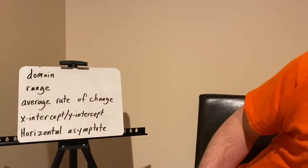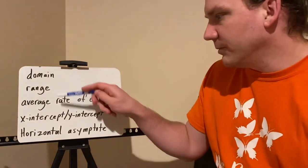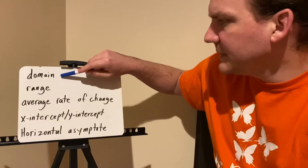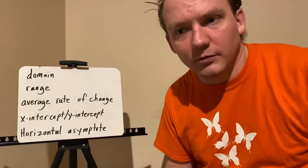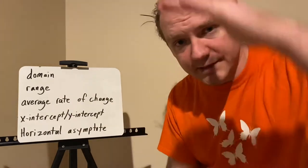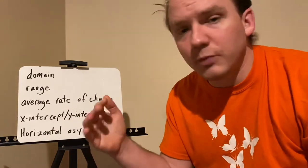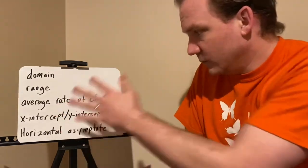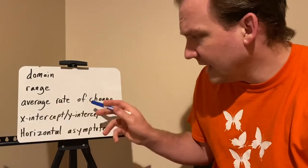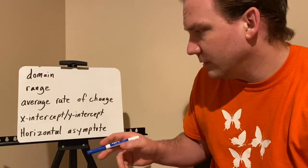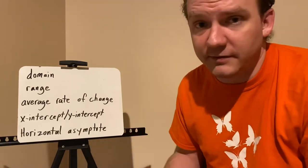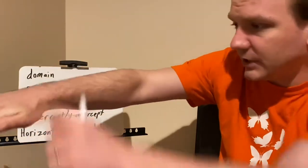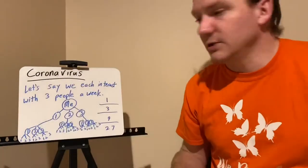The domain is basically all your x values — what are the possibilities? The range is all your y values. The average rate of change is where you take two points on the graph and figure out the slope of a straight line between those two points. Your x-intercept and y-intercept are where the graph crosses the axes, or if it even does — it might be none. A horizontal asymptote is a horizontal line that the graph approaches but never actually crosses.